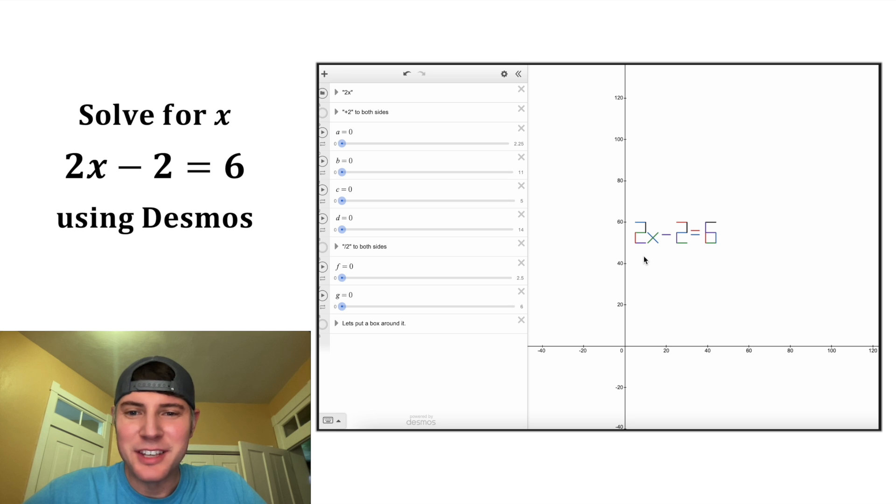Hey guys, this looks like a fun one. It says 2x minus 2 is equal to 6, and our goal is to solve for x. First, let's get rid of this negative 2 by adding 2 to both sides of the equation.